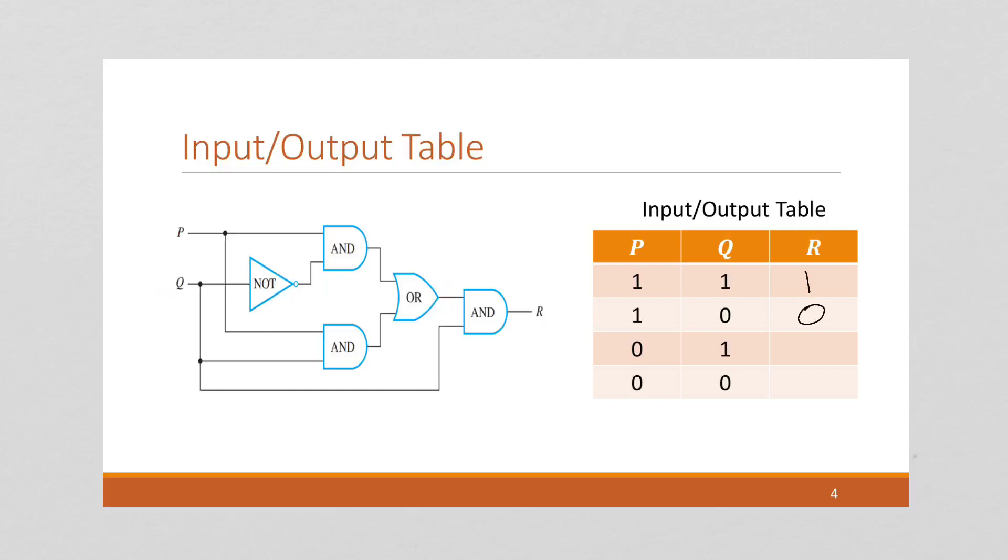And then we have this third row, 0, 1. This becomes a 0, 0. This AND down here gives me a 0, 0, and 0. Let's take a look at that last row. Okay, we have a 1 here, 0, 0, 0, 0.